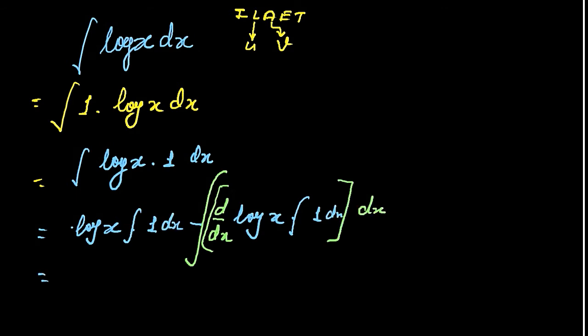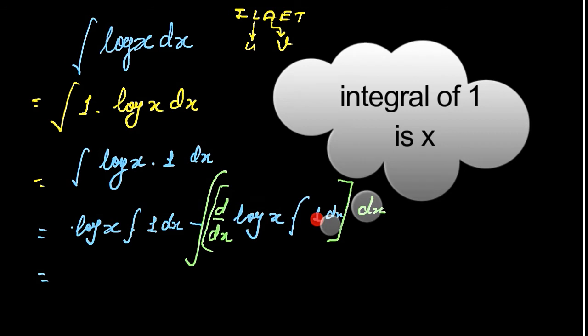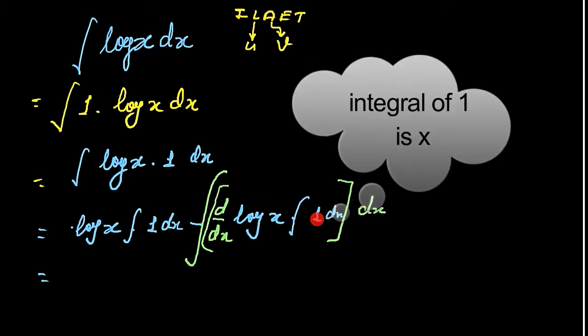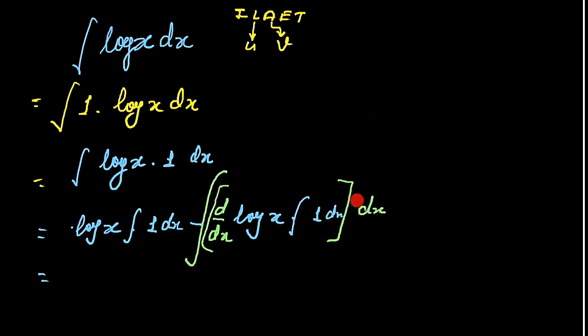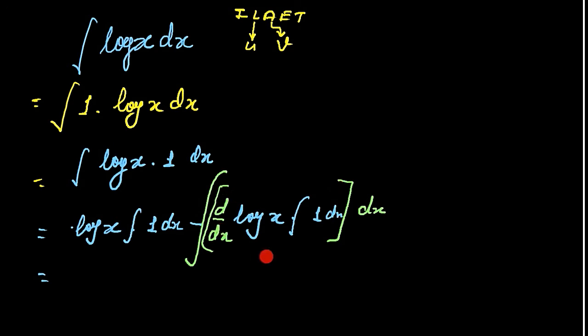Integration of 1 dx will be x, and the differentiation of log x will be 1 by x. So 1 by x into x multiplied by x will be 1. So this part is quite easy, it is the integral of dx only.